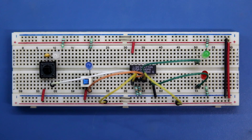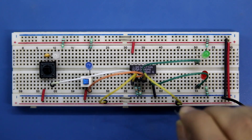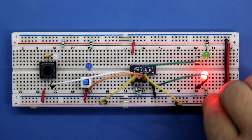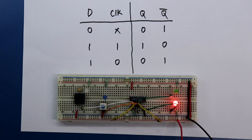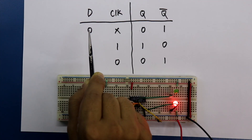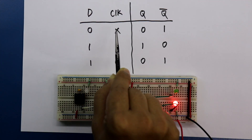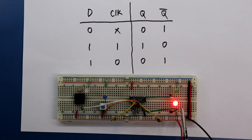Now connecting the 5 volt power supply — negative and positive. Now see here: both clock and D are 0, so we are getting Q bar. D is 0, and it doesn't matter whether the clock is 0 or 1 — we will get Q bar. We are getting Q bar as expected.